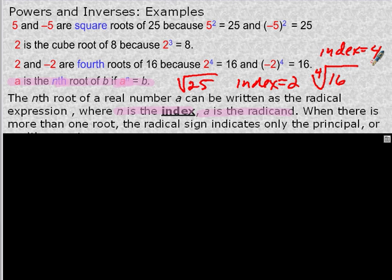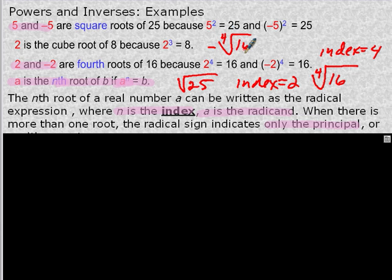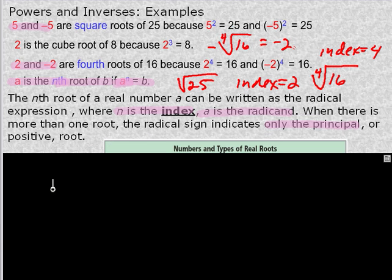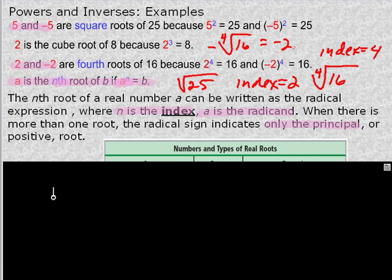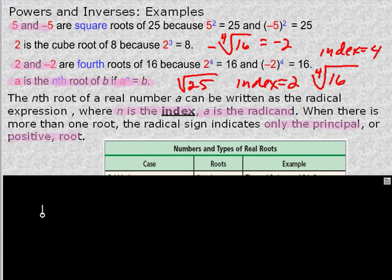When there is more than one root, the radical sign indicates only the principal root. So if I wanted the negative root, I would say the negative fourth root of 16, which would indicate I wanted negative 2. The radical indicates only the principal root. If no sign is indicated, then the principal root is going to be the positive root.